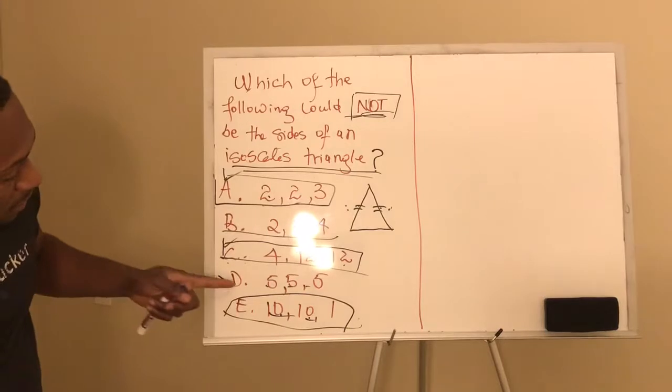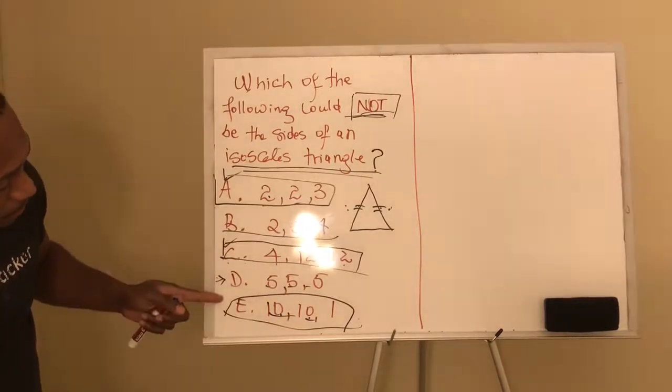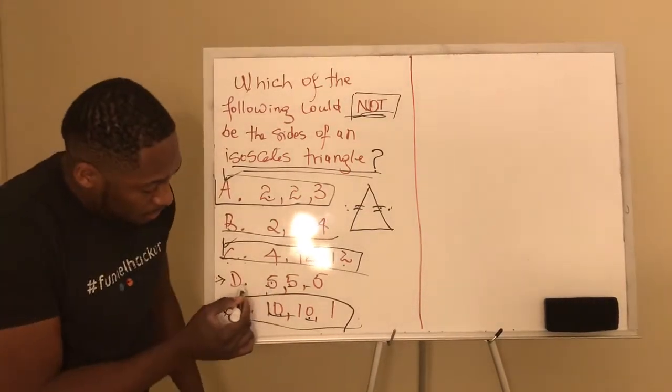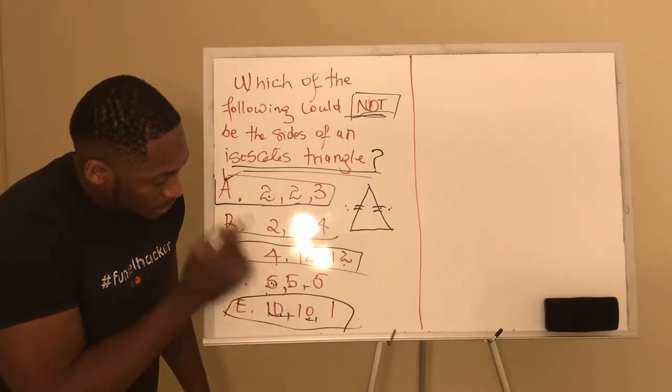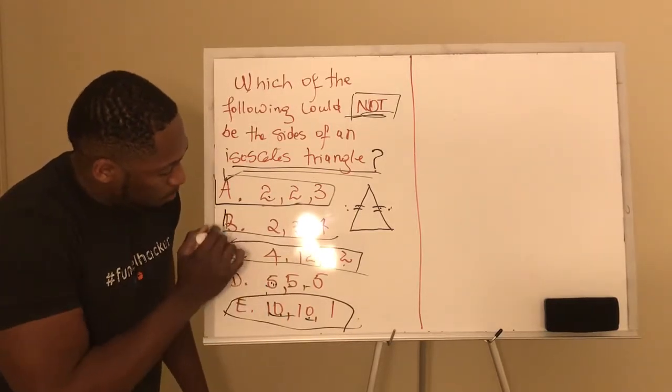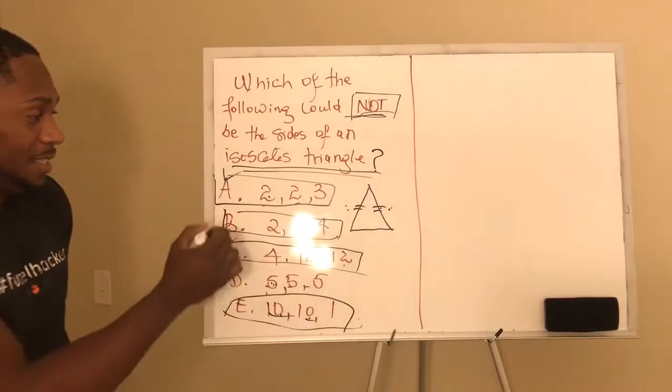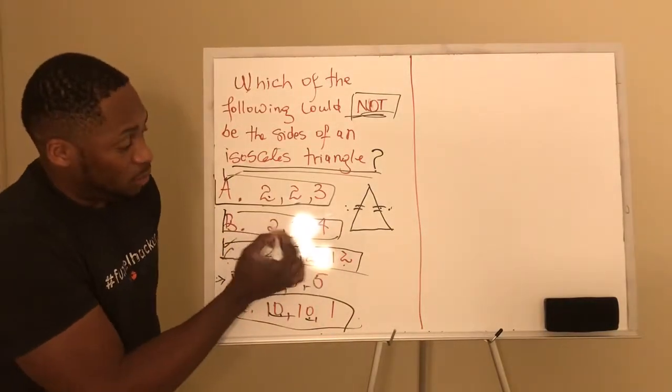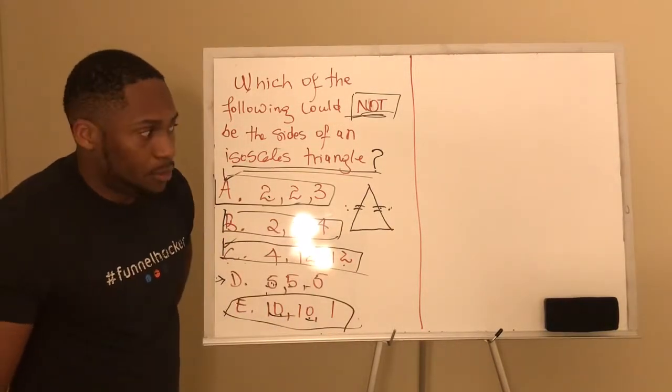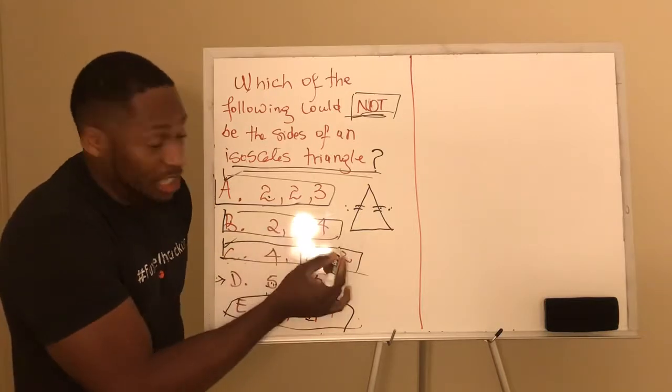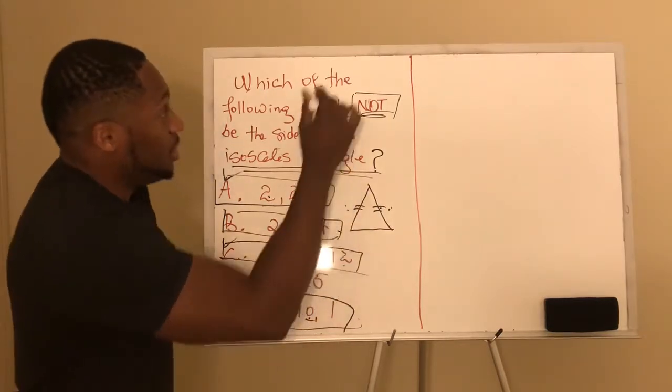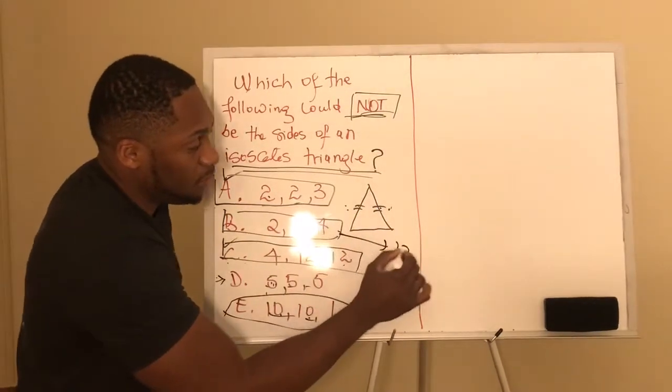But let's go to B and D. Let's go with B. We already know it doesn't have two sides that are satisfied. Two, three, and four, there's no sides here that are equal to each other. So that means the answer is, the answer choice that we're looking for is answer choice B.